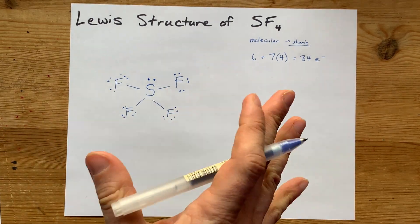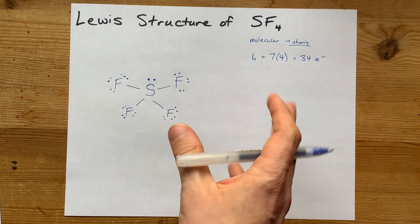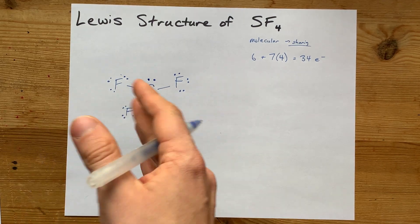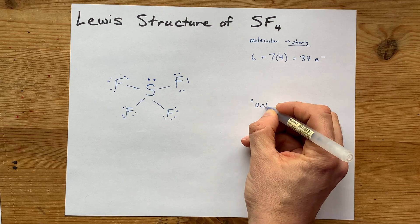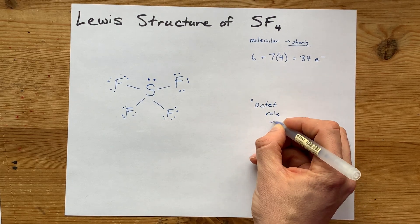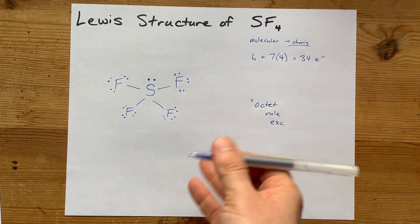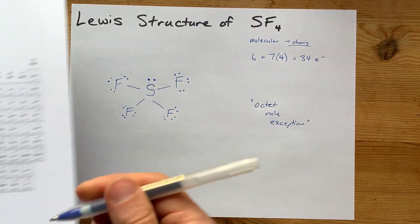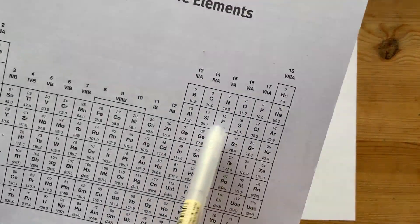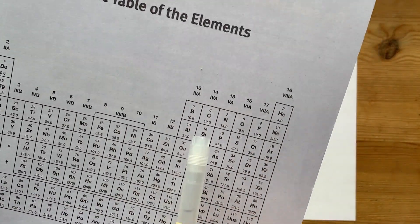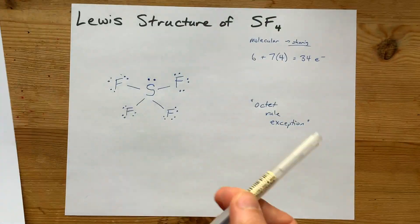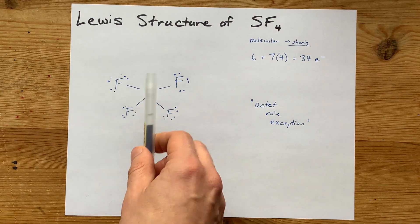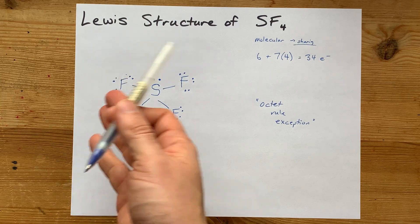The final step is making sure that the central atom has at least eight electrons around it. This sulfur has two, four, six, eight, ten — which is more than eight — but sulfur is an octet rule exception. It's allowed to have eight, but it can also accommodate ten or even twelve. Realistically, the only atoms that always satisfy the octet rule are carbon, nitrogen, oxygen, and fluorine. Almost all others are an octet rule exception in some way, so don't stress about the sulfur having ten electrons around it — it's allowed to.